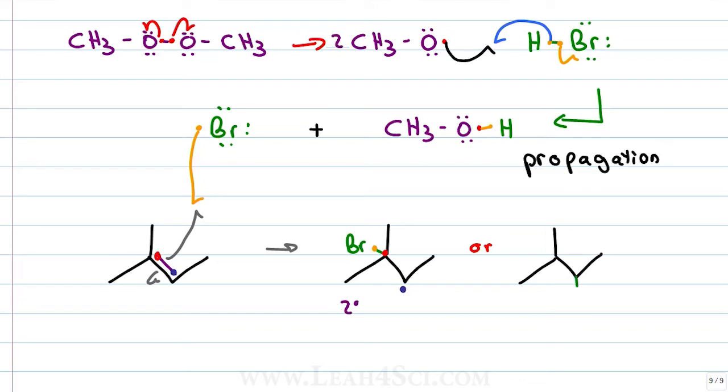My second option is to place bromine on the secondary carbon with a bond between itself and that blue pi electron leaving the red electron to sit as a lone radical on the tertiary carbon. The way to determine the final product is to understand the stability of the radical intermediate.